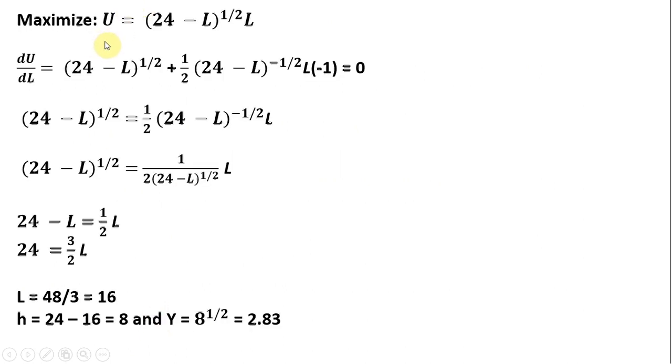The next step is to maximize utility. So we're going to maximize utility by taking a derivative and then setting that derivative equal to 0. So the first step here is the derivative of this. The L will just become 1. So that's why I have 24 minus L to the 1 half. I'm missing the L term. And then the second part of this derivative is going to be plus 1 half.